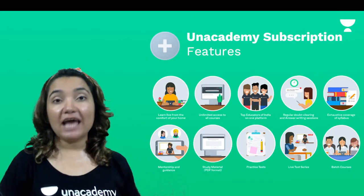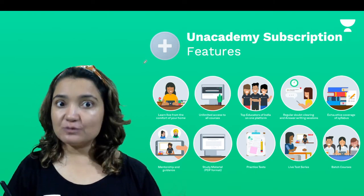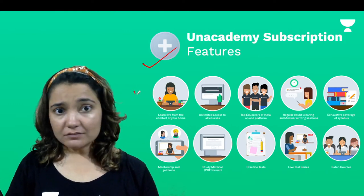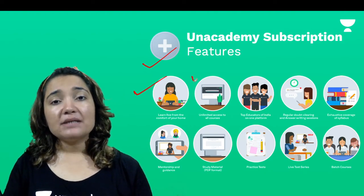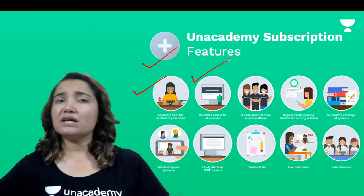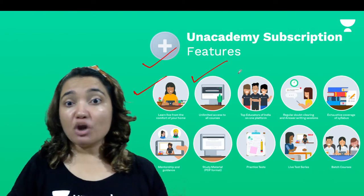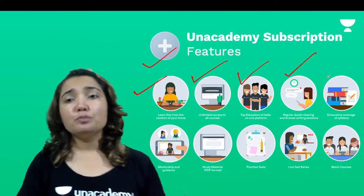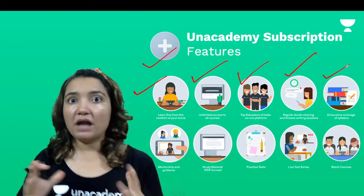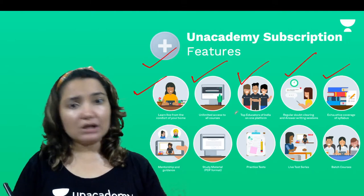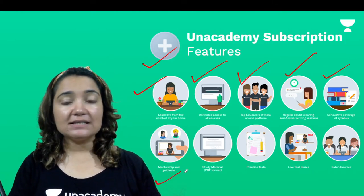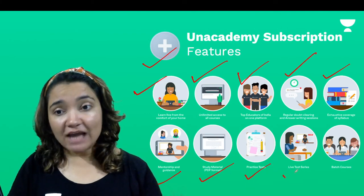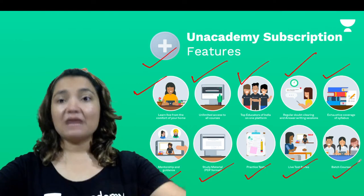To explore this poem in more detail, you need to buy the Unacademy subscription. With the Plus subscription, you get unlimited courses, access to the top and best educators, regular doubt clearing sessions, full syllabus coverage, mentorship and guidance, study material in the form of PDFs, practice tests, live test series, and batch courses. You will get a lot of benefits from an Unacademy subscription, so if you haven't bought it yet, please buy it quickly.